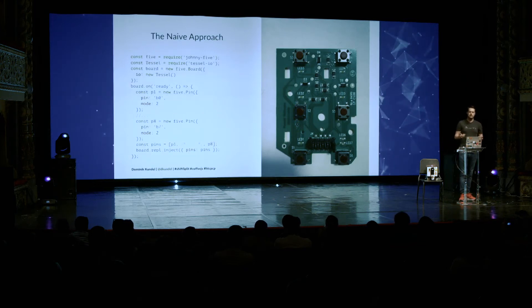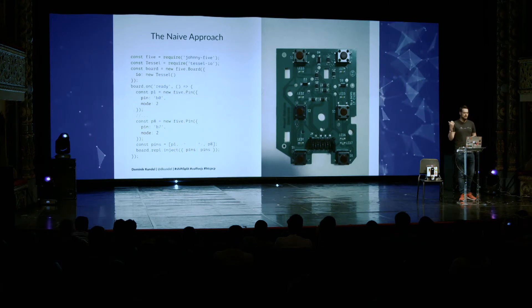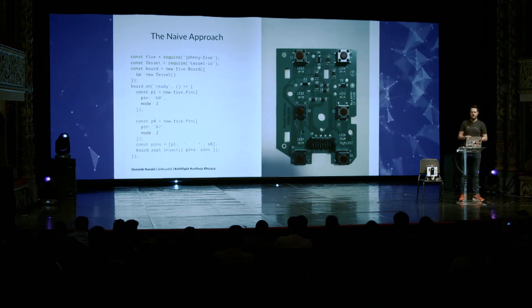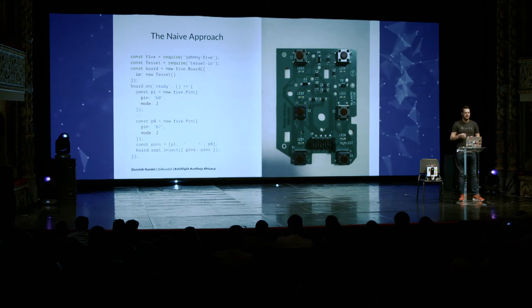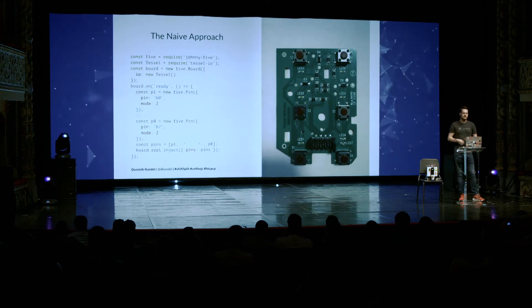This is what the first script looked like. That's all you need to do to control the whole thing. We imported the Johnny-Five library, then imported the TESL IO plugin to initialize a board with it. And then once the board was ready, we initialized seven pins — every pin except the one we deemed as power — put them all in an array, and exposed that array through the Johnny-Five wrapper, which allows us to interact with it.